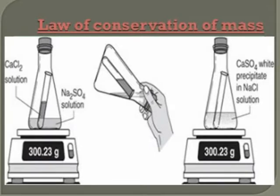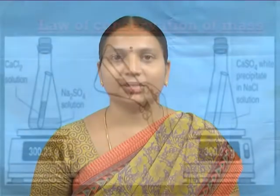More simply, the mass of reactants is equal to the mass of products in a chemical reaction. For example, the reactants CaCl₂ and Na₂SO₄ are combined and a precipitate is formed. CaCl₂ + Na₂SO₄ → CaSO₄ + 2NaCl, and the products have the same weight as the reactants, following the conservation of mass.